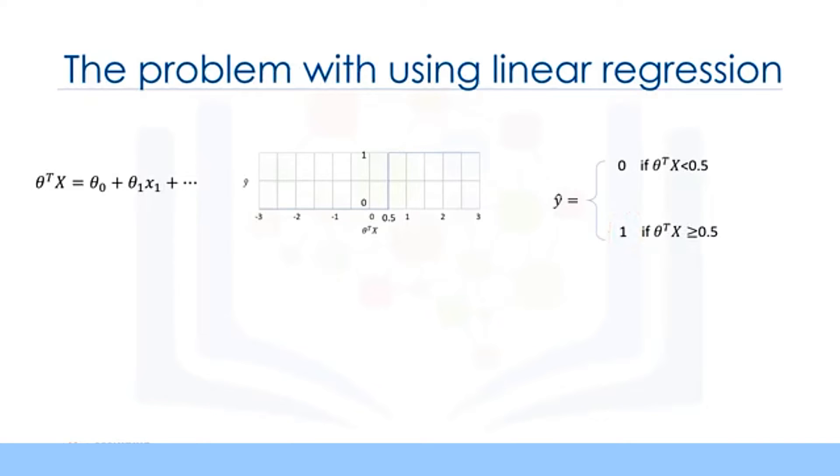Instead of having this step function, wouldn't it be nice if we had a smoother line, one that would project these values between 0 and 1? Indeed, the existing method does not really give us the probability of a customer belonging to a class, which is very desirable. We need a method that can give us the probability of falling in a class as well. So, what is the scientific solution here?